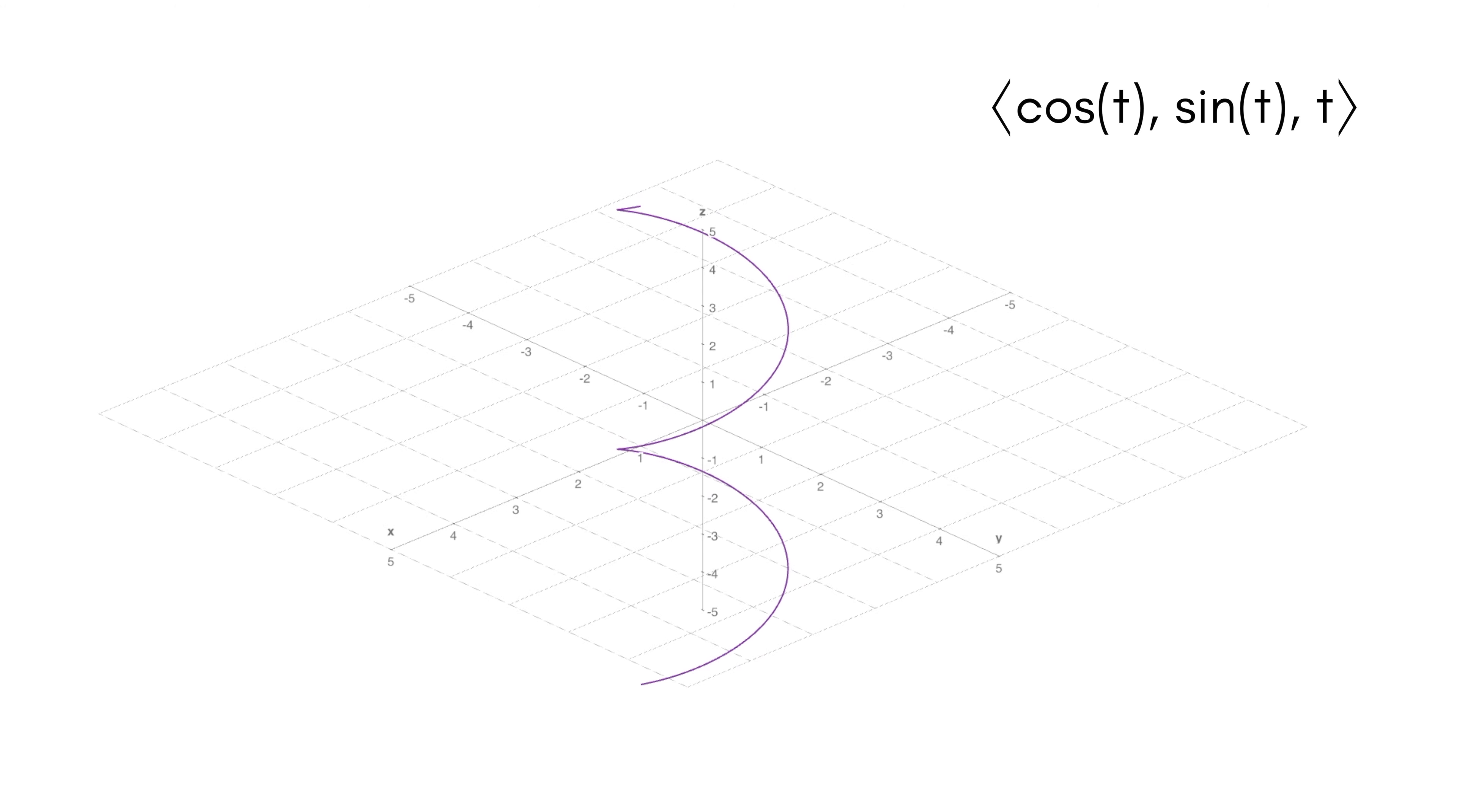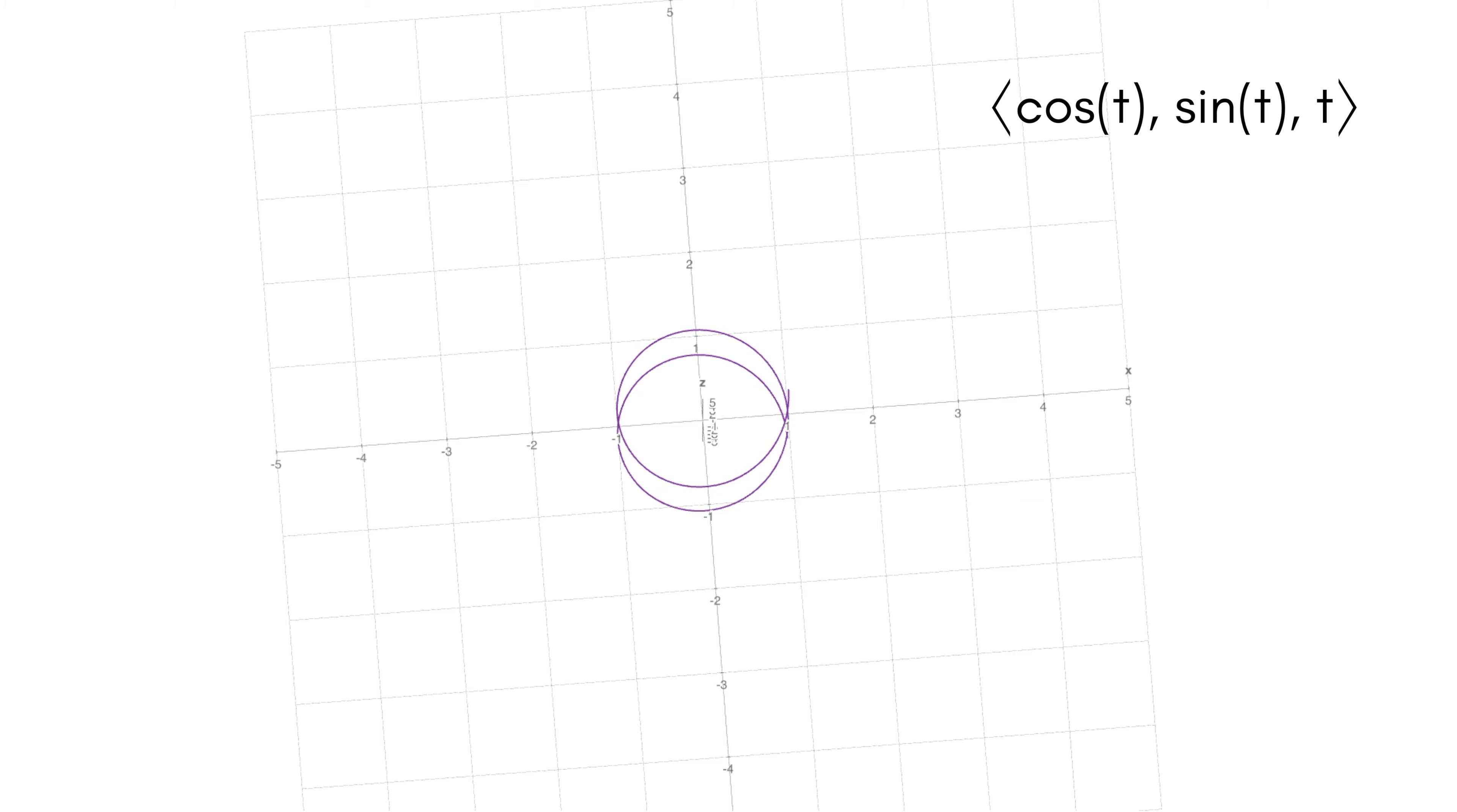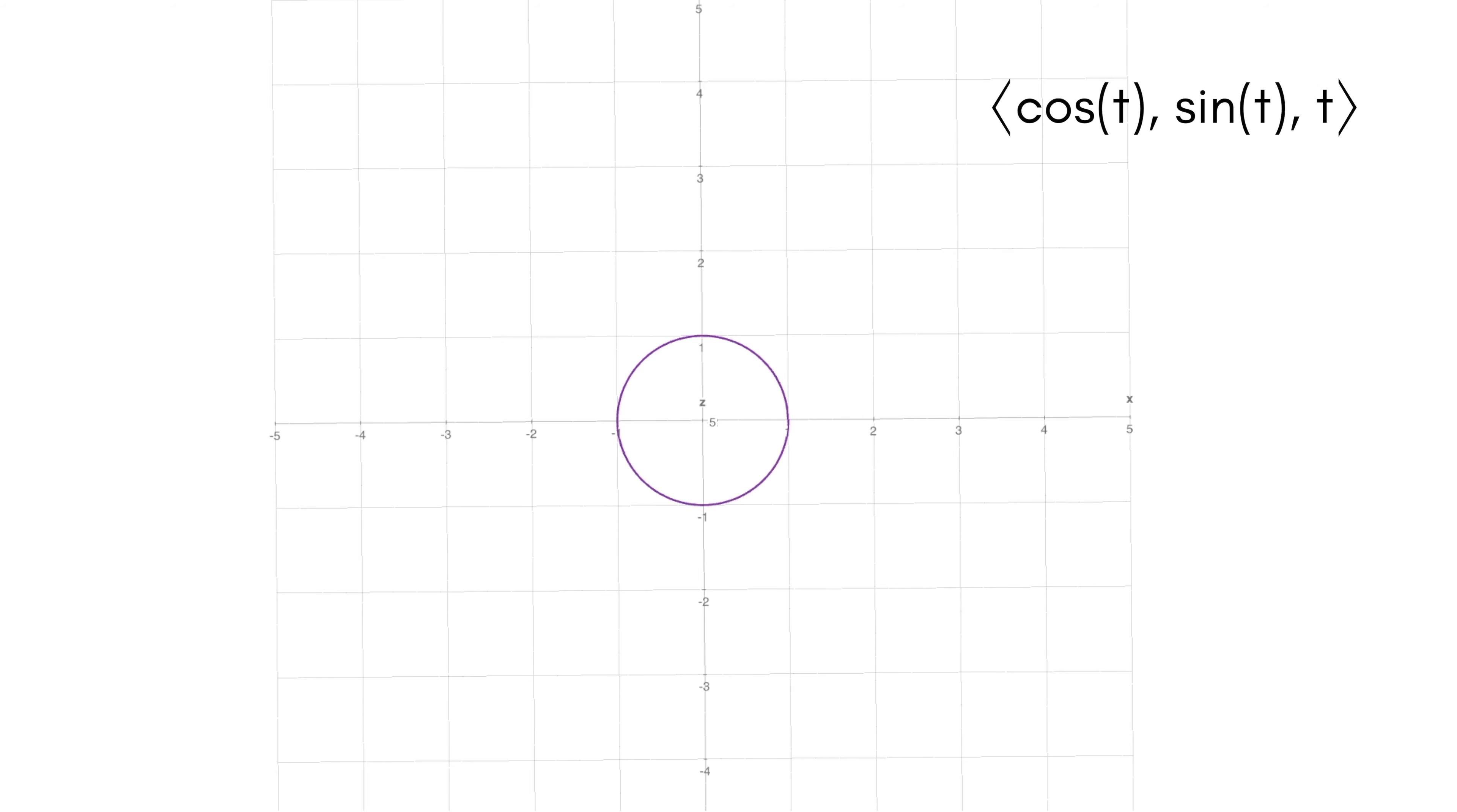Then if we ignore the z component and look at just the x and y, we're getting a unit circle. That's because we have x is cosine of t and y is sine of t, which corresponds to the unit circle. So that's a pretty standard example of something cool we can do with these parameterized curves or vector-valued functions.